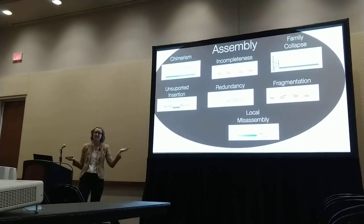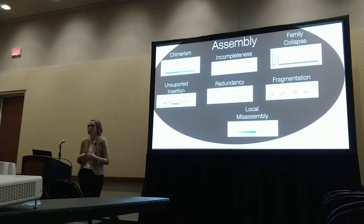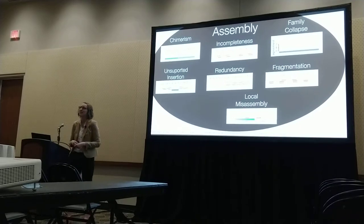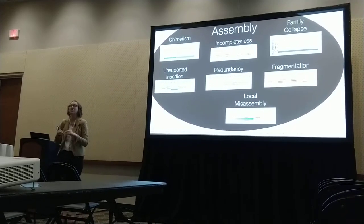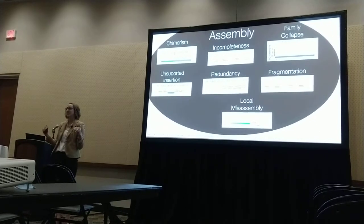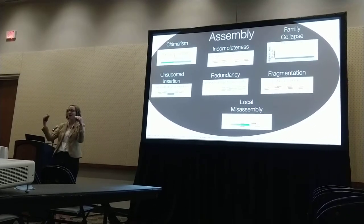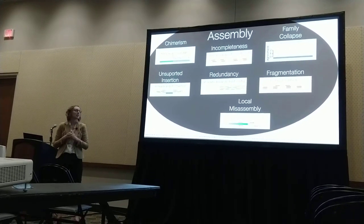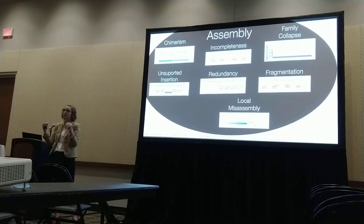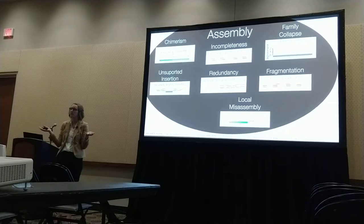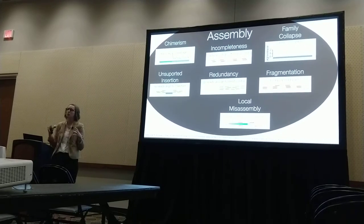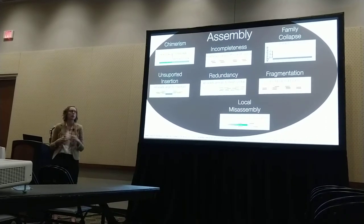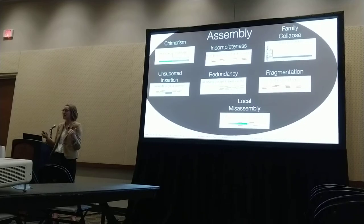Luckily there's a program called Transrate that can detect these things and evaluate our transcriptome assemblies. Transrate takes a de novo transcriptome assembly, takes the reads used to make that assembly, and maps those reads back onto the assembly. Based on how those reads map, it can detect all of these errors and assigns each individual transcript a score from zero to one based on how well it was assembled. It then assigns the transcriptome as a whole a score based on all those individual scores — a really great way to look at structural continuity.